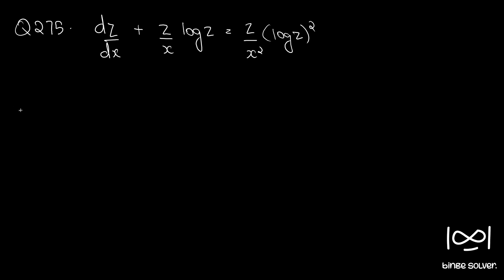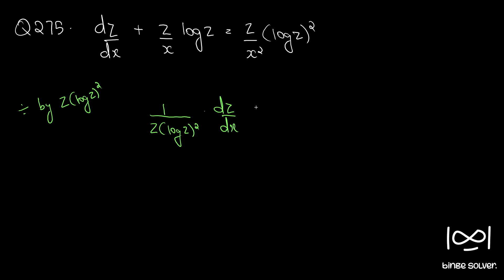Dividing throughout by z·(log z)², we have — the reason for dividing throughout by z·(log z)² is we are trying to eliminate the z terms from the right hand side. We have (1/z)·(log z)² · dz/dx plus (1/x)·log(z) equal to 1/x².